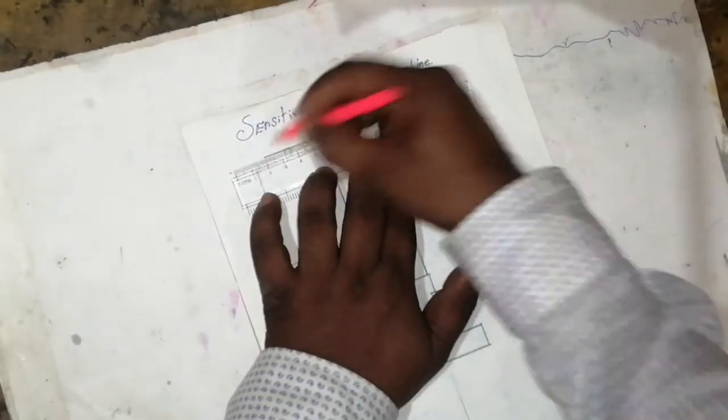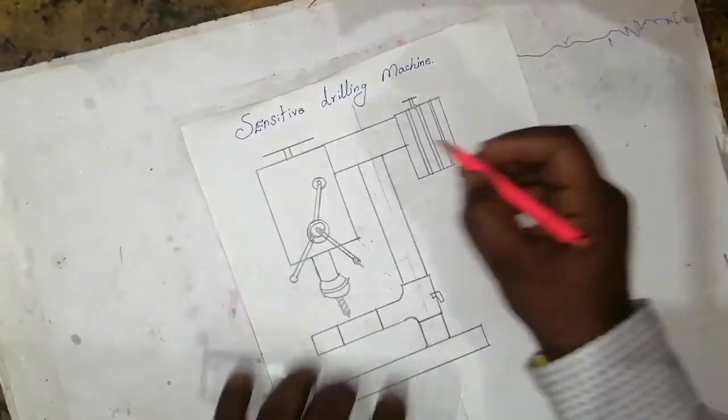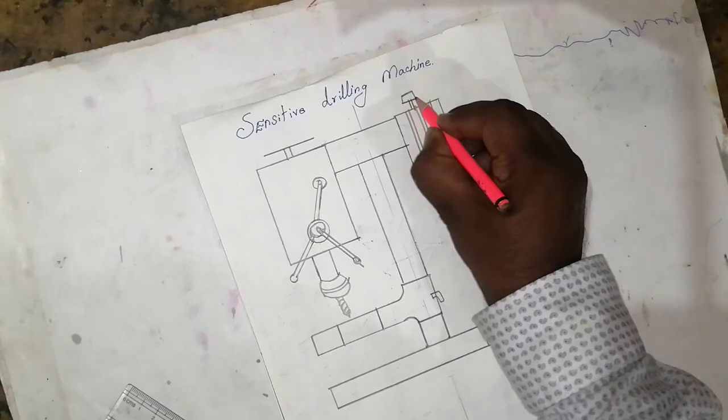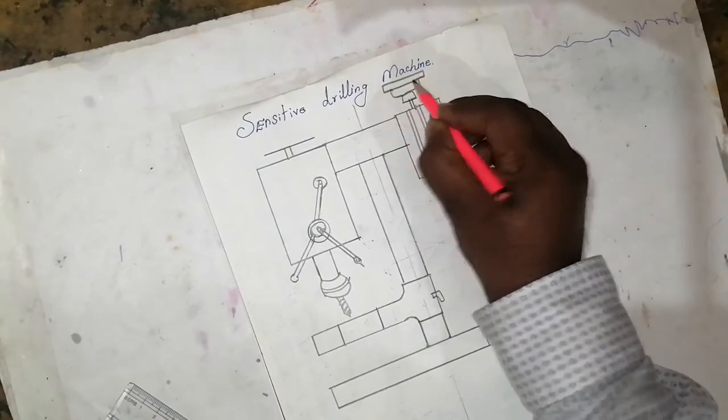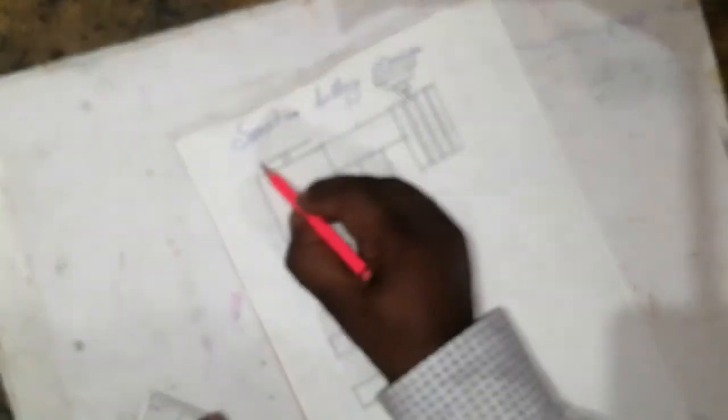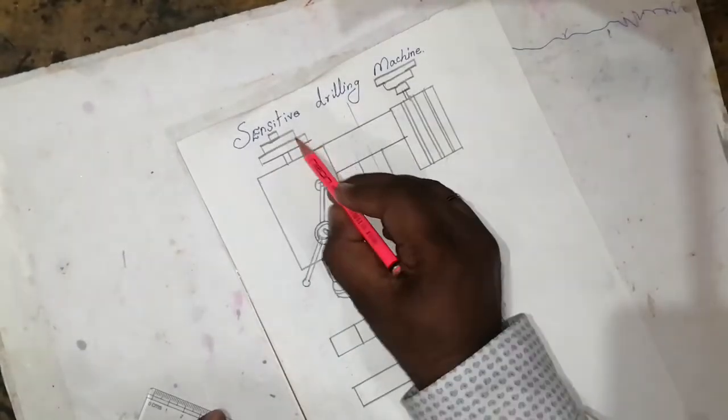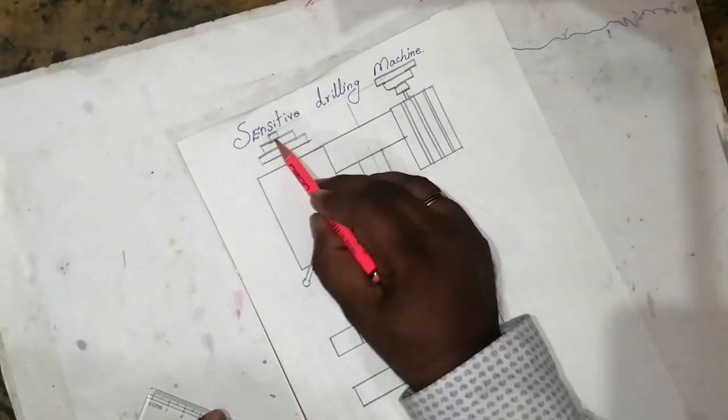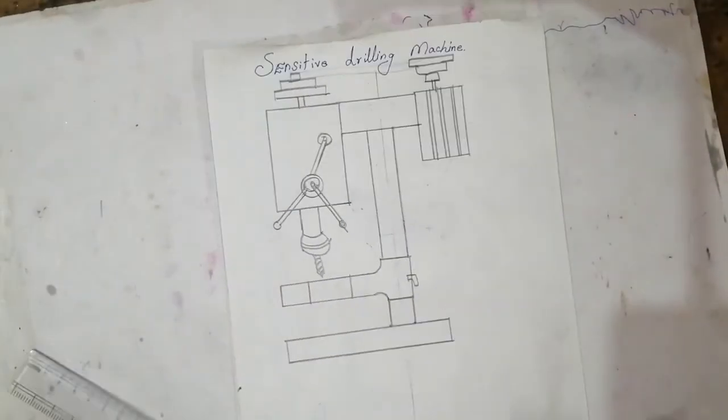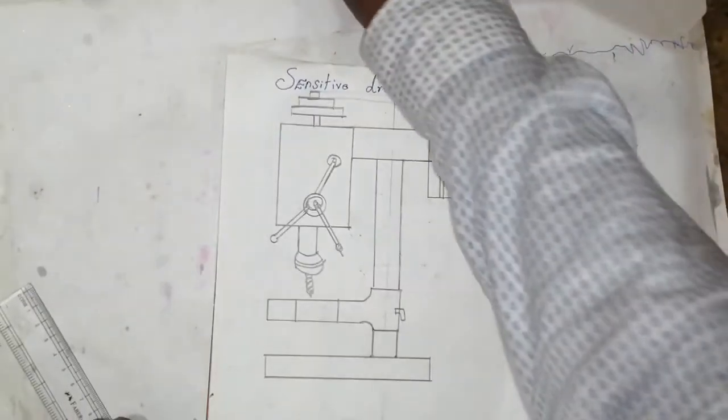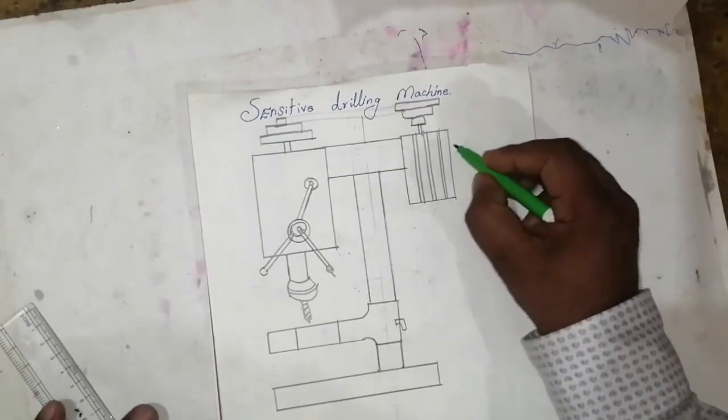This portion will come smaller. See, this is smaller, this is equal. This is what size it is, it will come here. So it'll come like this. This belt which is will be joined here.